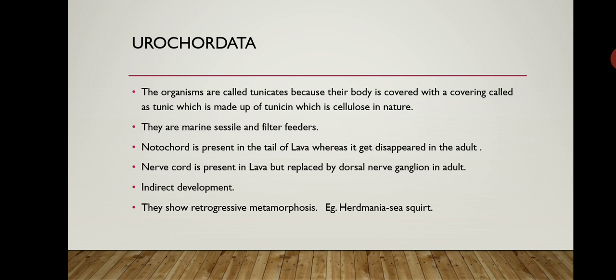What are the features of Urochordata? The first feature is that the organisms are called tunicates because their body is covered with a covering called tunic, which is made up of tunicine and is loose in nature. So in Urochordata, we call them tunicates because the covering is tunic.